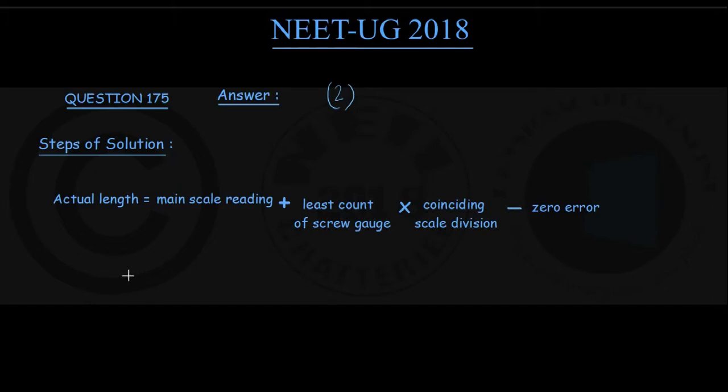Referring to the question, the main scale reading is 5 mm, plus least count of screw gauge which was given to be 0.001 cm. But for uniformity of unit, let us make it mm: 0.001 cm is 0.01 mm, that is the least count of screw gauge.